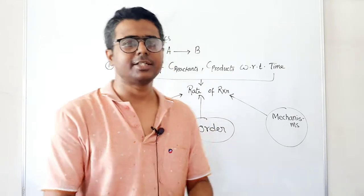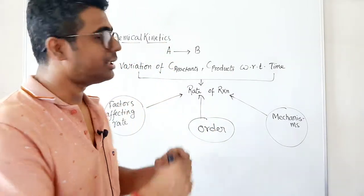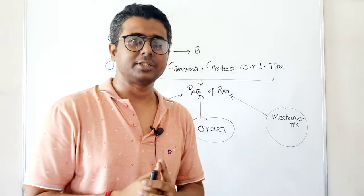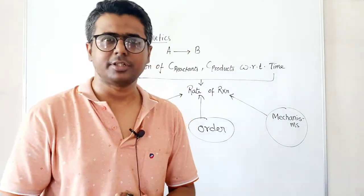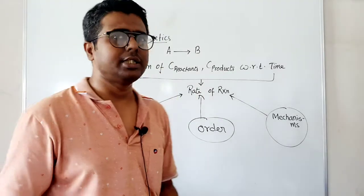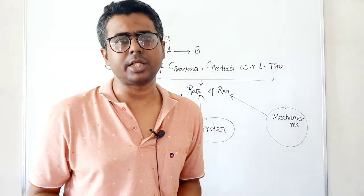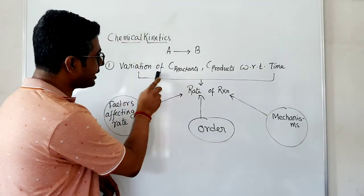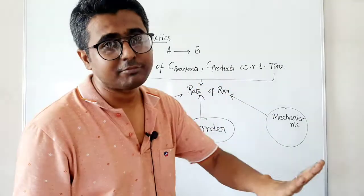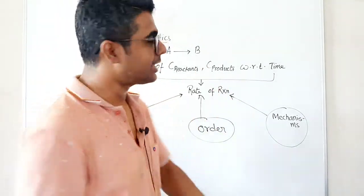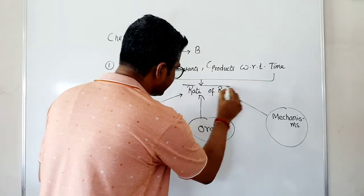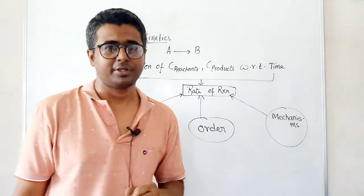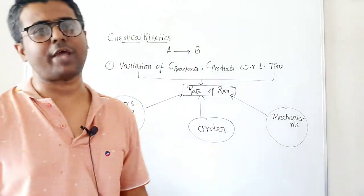Rate of reaction means how quickly a reaction proceeds. For example, if A completely changes to B in one second, the rate of reaction is very fast. If it takes years for A to change to B, the rate is slow. This variation of concentration of reactants and products with time is the rate of the reaction, and studying it is chemical kinetics.